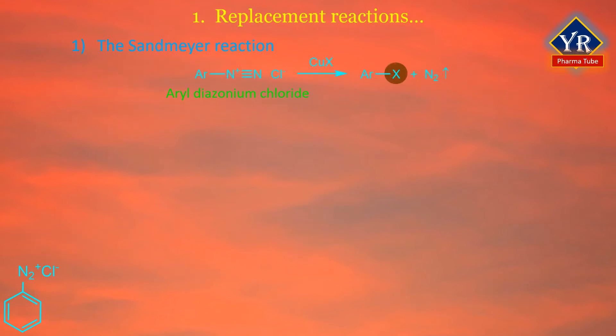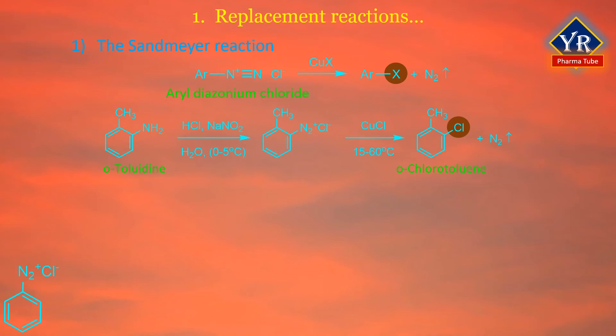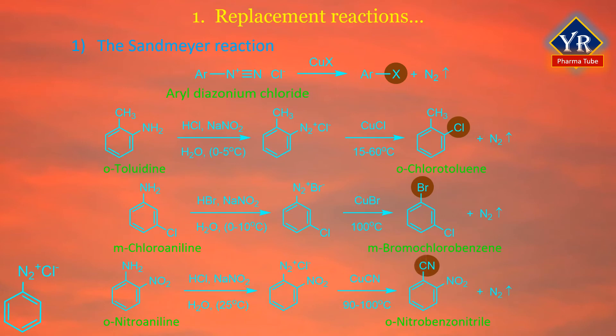The Sandmeyer reaction: replacement of the diazonium group by chlorine, bromine, or nitrile. Copper salts have a specific affinity for diazonium salts. Cuprous chloride, cuprous bromide, and cuprous cyanide react with aryl diazonium salts to give aryl chlorides, aryl bromides, and aryl cyanides respectively. These reactions are known as Sandmeyer reactions. The mechanism appears to be radical in nature, not ionic.